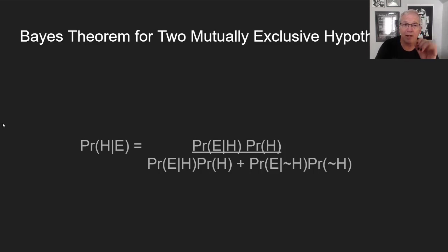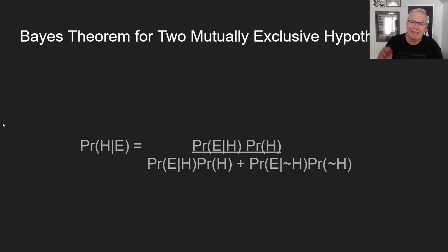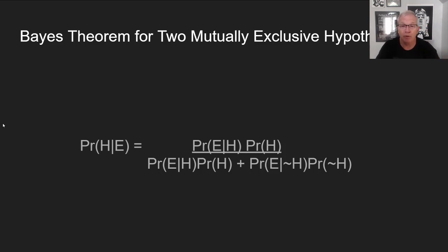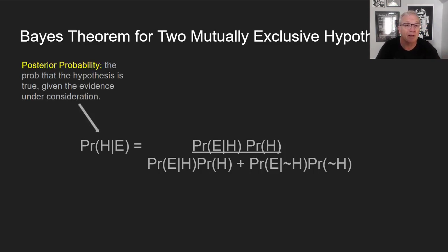We have been focusing our attention primarily on this version of Bayes' theorem for two mutually exclusive hypotheses. In this version, I've substituted H for hypothesis and E for evidence, and we are considering a case where either the hypothesis is true or it's false — so we have a relatively simple denominator. We just look at the evidence in the cases where it's true and where it's not.